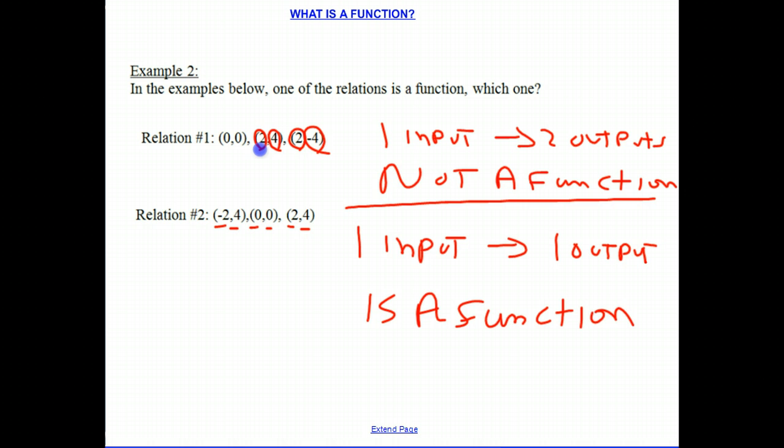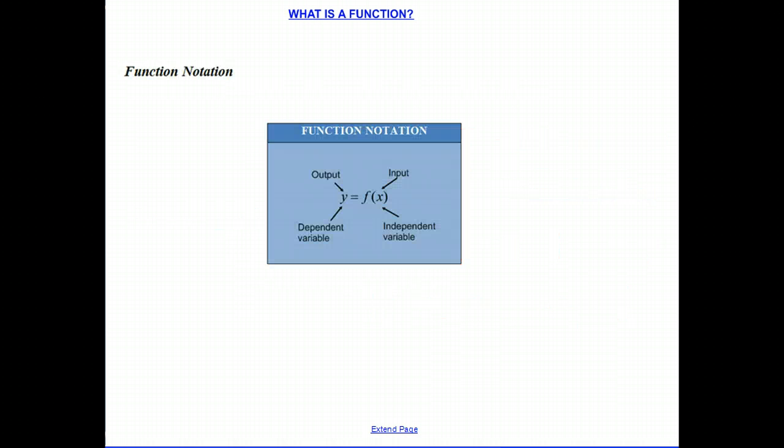So now let's look at function notation. One way of writing functions is where y is equal to f of x. In order to understand this, let's write an equation down. We could say that f of x, which is also equal to y because y represents the output as f of x does, is equal to 2x plus 1.